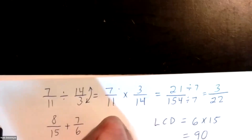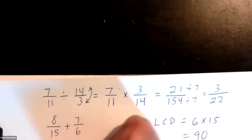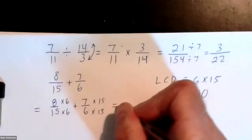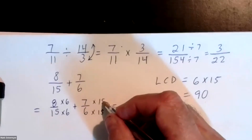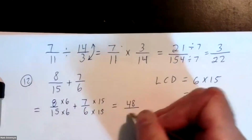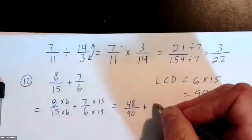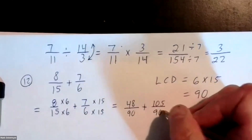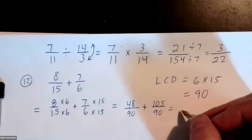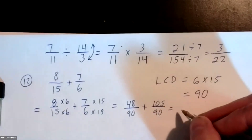This fraction eight fifteenths gets multiplied by six over six. Eight times six is forty-eight over ninety. Seven times fifteen is one hundred five. What's one hundred five plus one hundred forty-eight? Let's see — one hundred fifty-three, I think.